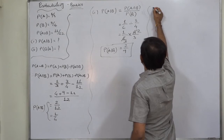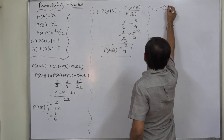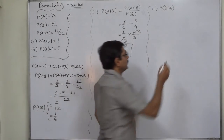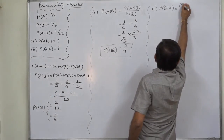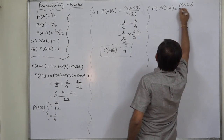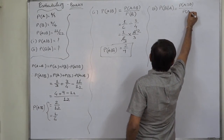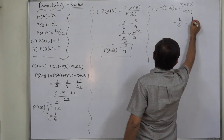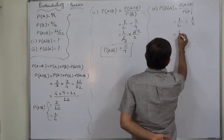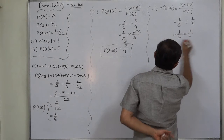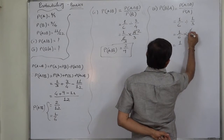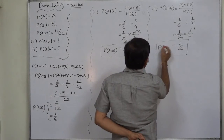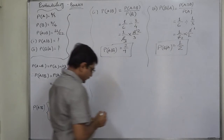Similarly, we can calculate P(B|A) — the probability of event B happening if A has happened. That is P(A∩B) divided by P(A): (1/6) ÷ (1/3) = (1/6) × (3/1) = 1/2. So P(B|A) is 1/2 in this case.